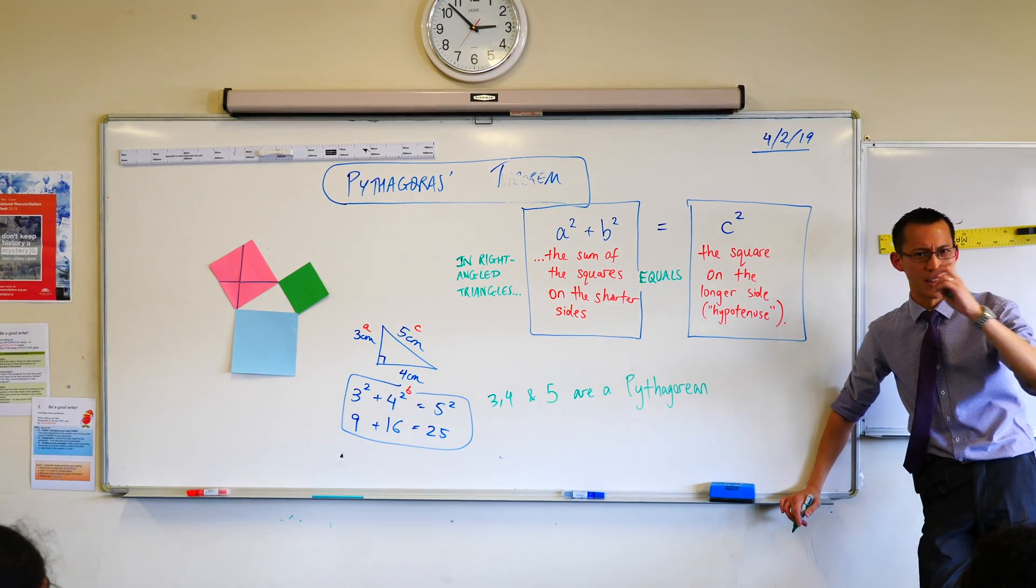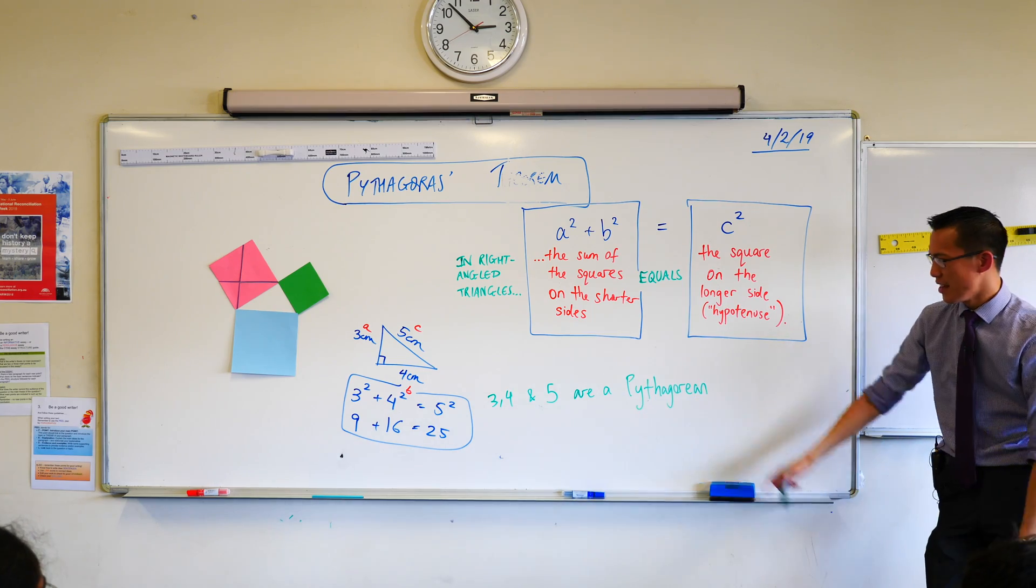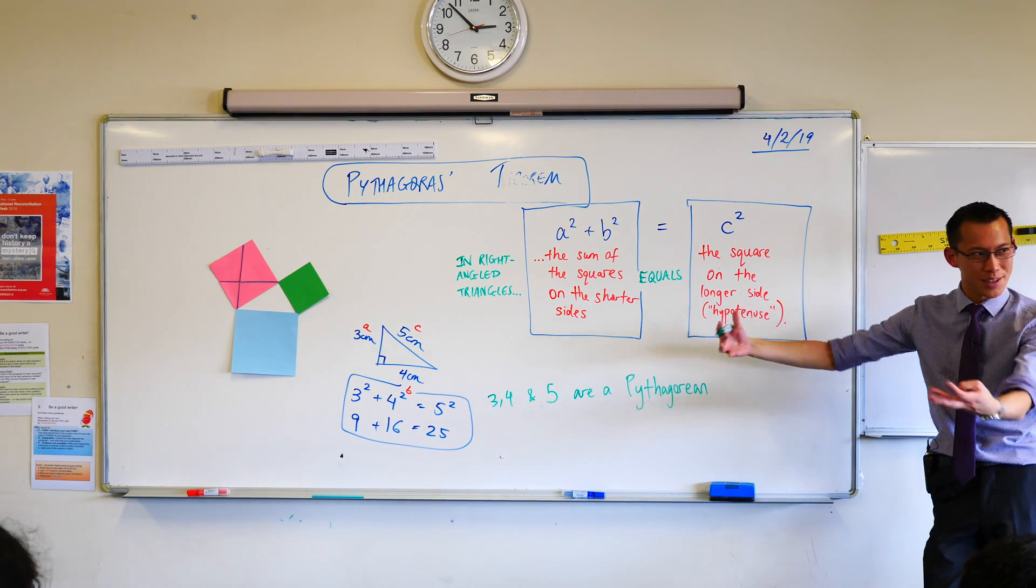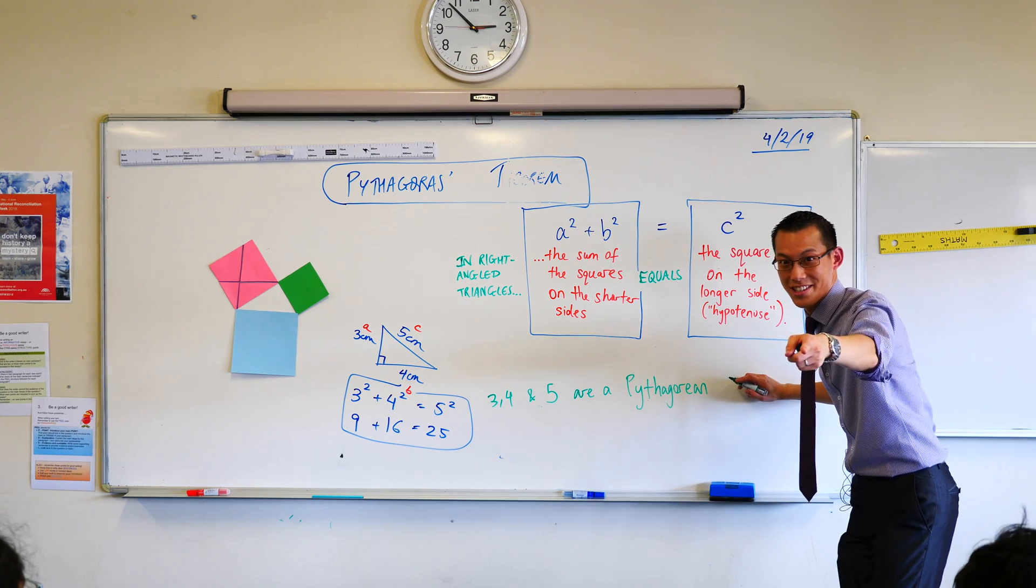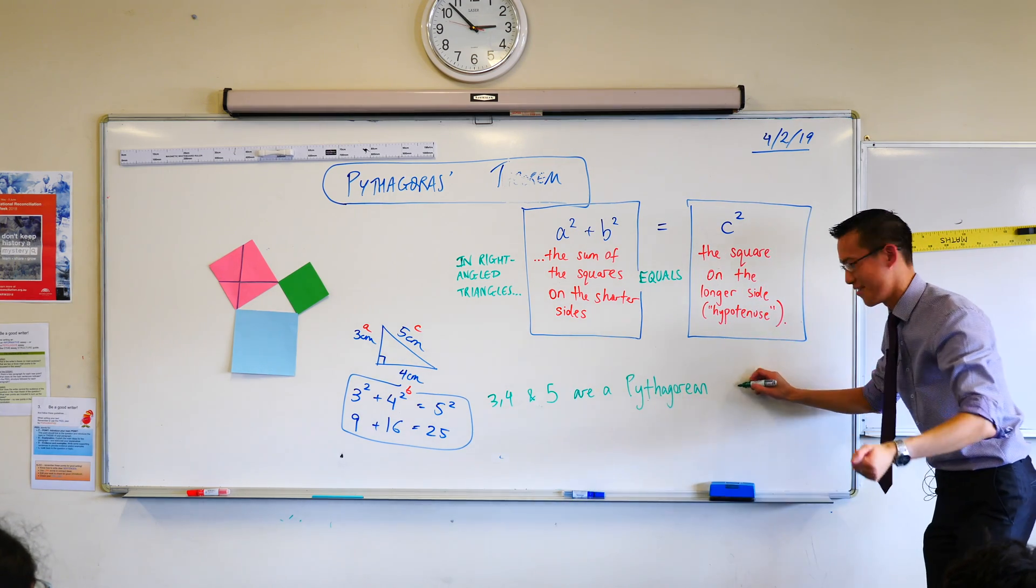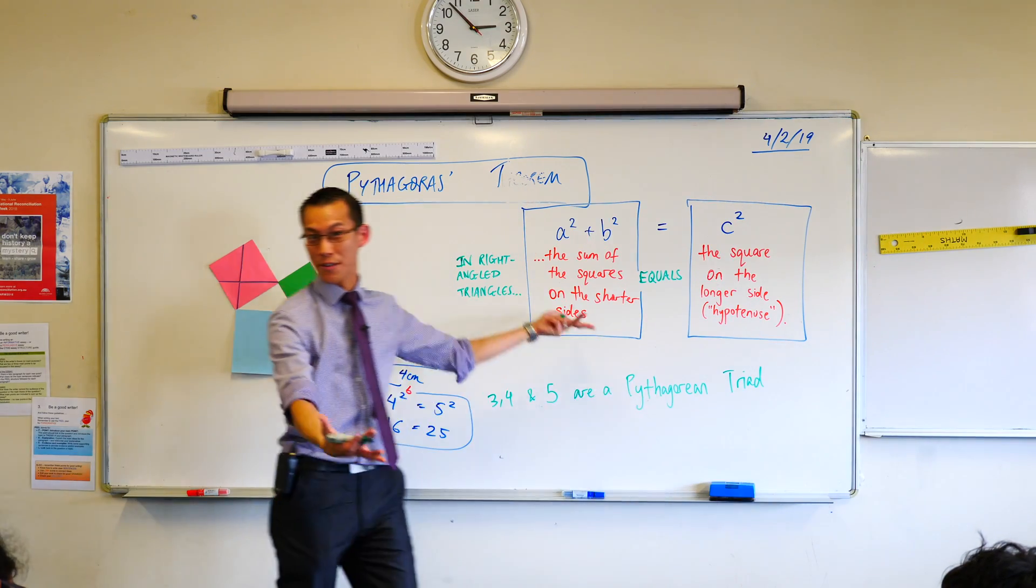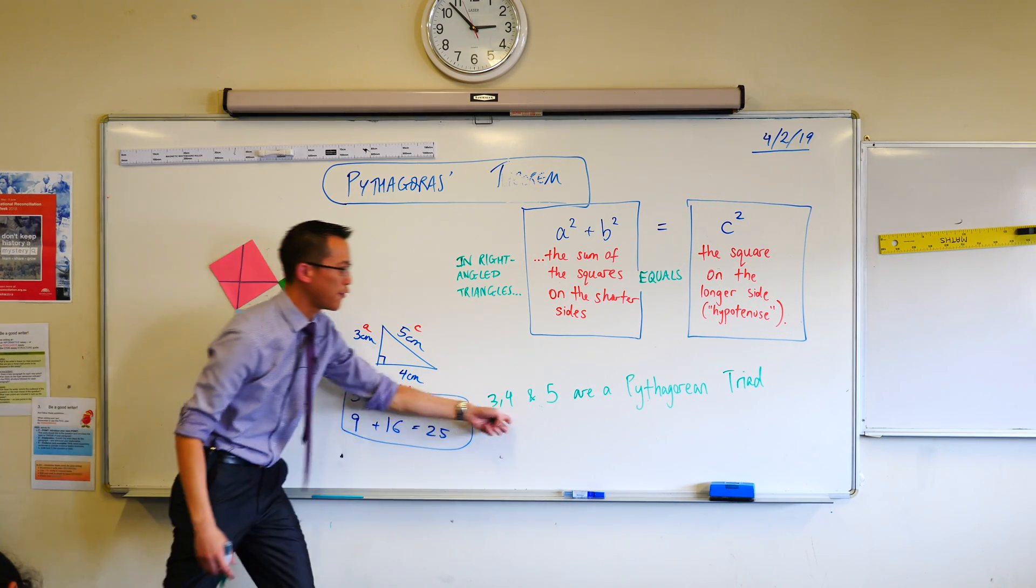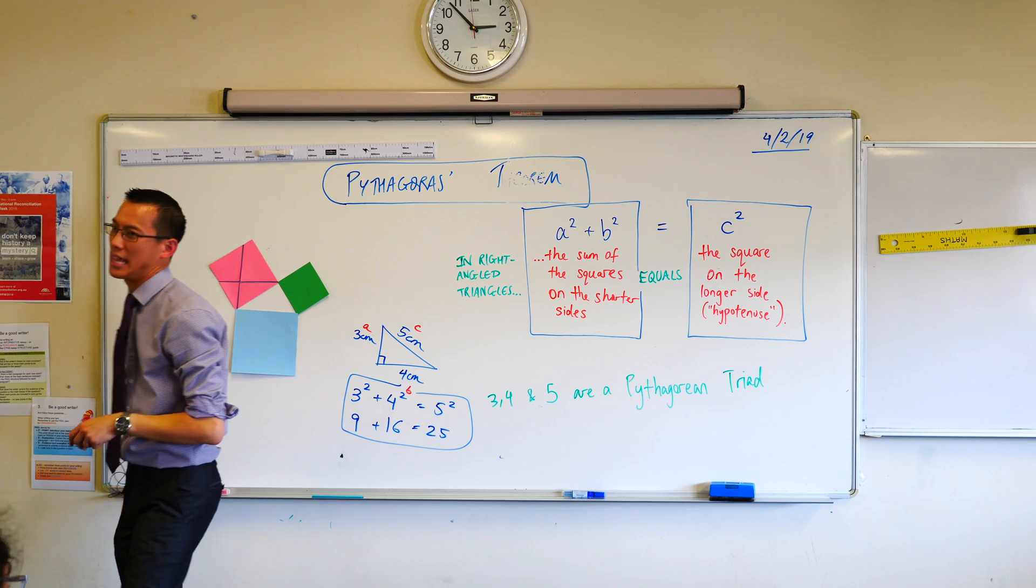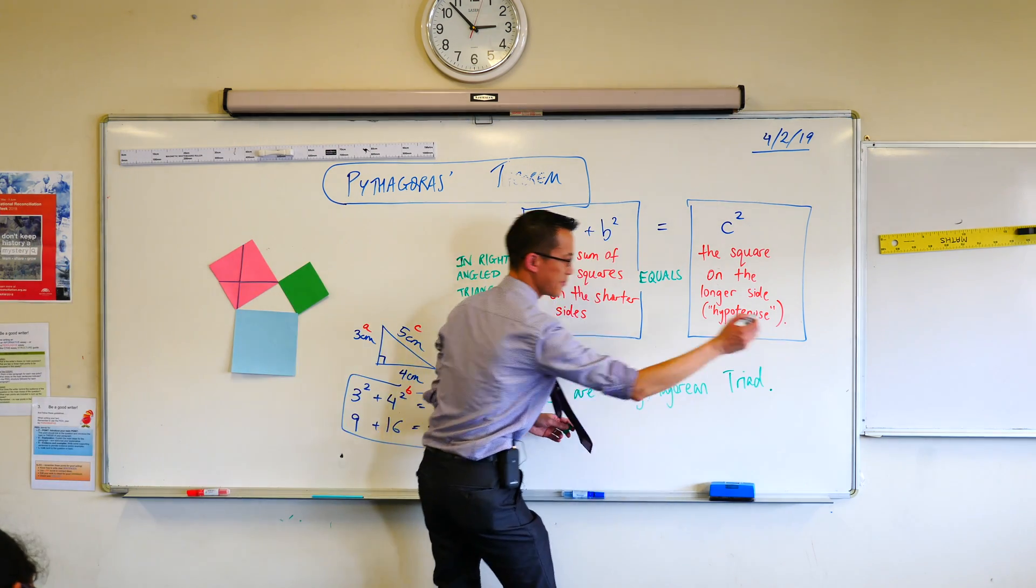When you've got three children and they're all born together at the same time, we call them triplets, right? They're like kind of the same. These are not the same. So we kind of want to say triplets, but not quite. We call this, do you have your hand up because you know the word or are you asking a question? What's the word? Very good. Triad is when you have three things. They're different, as you can see, three, four, and five, but they are together in this particular relationship. Three, four, and five are a Pythagorean triad. Full stop. That's kind of neat.